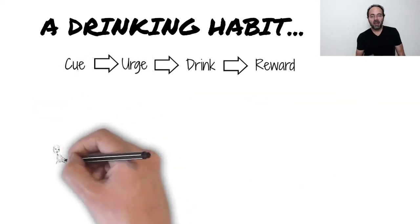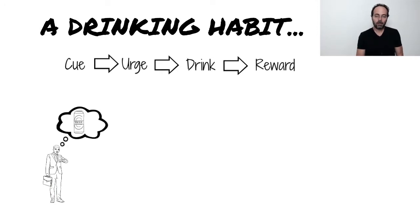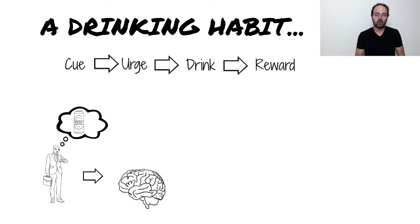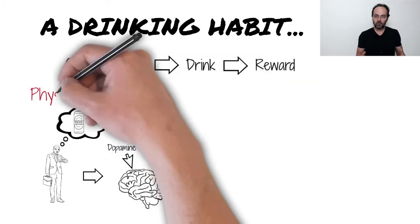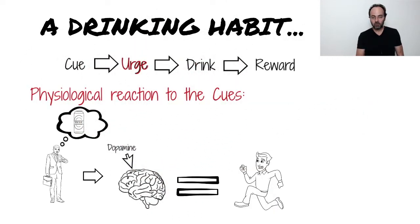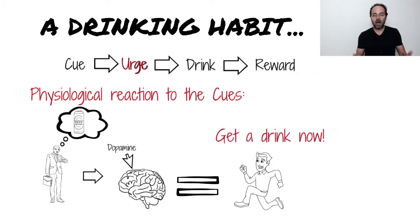Based on your past drinking experience, your brain has made an association between these conditions and the reward of drinking. And once that association is created, when you next observe the cues, your brain reacts by giving you a shot of the neurotransmitter dopamine. This creates an urge, which is an actual physiological response that makes you want to drink. This response motivates you into action to make sure you don't miss out on this golden opportunity to get the reward.